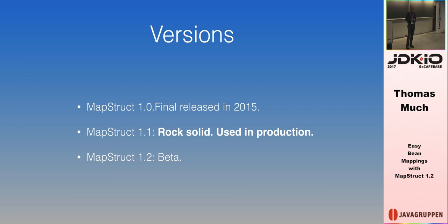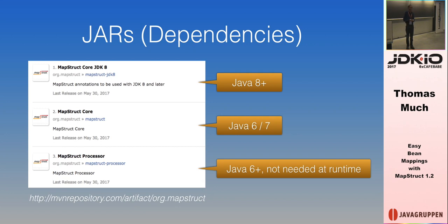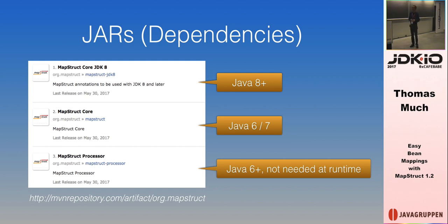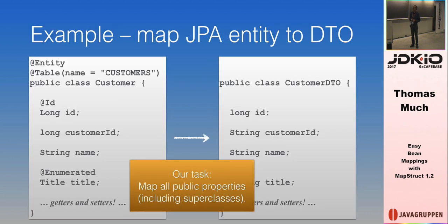Version 1.0 was released two years ago, 1.1 is rock solid and used in production, and today I'll be talking about MapStruct 1.2 which is still in beta but solid. How do you use it? There are some JAR dependencies: the base archive with annotations and the minimal runtime dependency, and the MapStruct processor — which is only required at compile time, you don't need to include it in your deployable application. Very small JARs, and it's quite easy to set up.